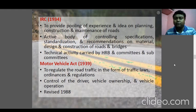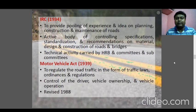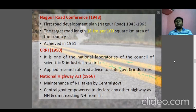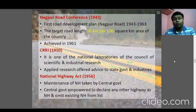The first road development plan, known as the Nagpur Road Plan, covered the period 1943 to 1963. The target road length was 16 kilometers per 100 square kilometers. Remarkably, they achieved this goal even before the target date — completing it by 1961, two years ahead of schedule.